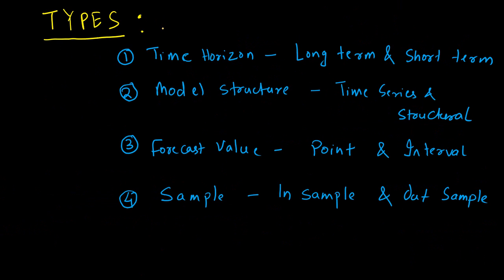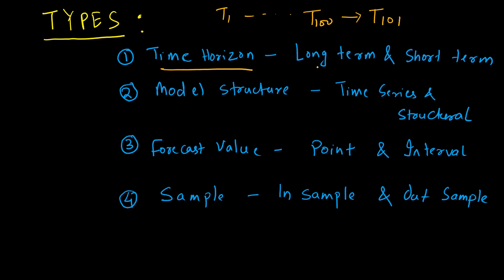Forecasting models are divided into different types based on certain criteria. The first criterion is the time horizon. Sometimes you want a forecast for the next time period — say you have data from t1 to t100, and you are interested only in t101. That is a short-term forecast. Or maybe t101, t102, and t103 — the next three periods. That's also a short-term forecast.